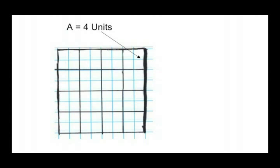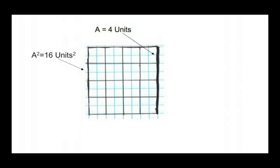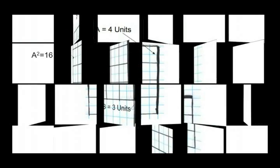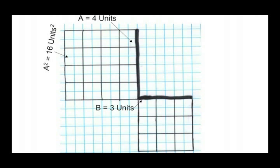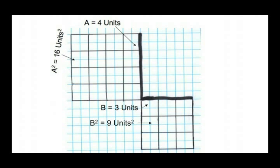Now that you know a little bit about the history, let's take a look at how it works. You can start by drawing a right triangle — that is one where two of the sides come together to form a right angle. In our example, side a is 4 units long, meaning a squared will be equal to 16 square units. Next, we'll draw side b, which will be 3 units long, making b squared equal to 9 square units. It's important to notice that these two sides come together to form a right angle, so they are called the legs.